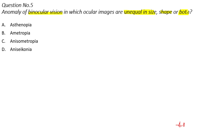Let's see the options. Option A: Asthenopia. Option B: Ametropia. Option C: Anisometropia. And Option D: Anisoconia.